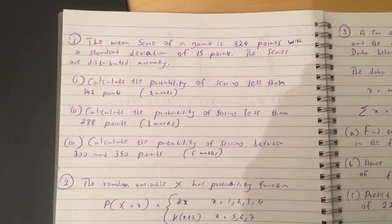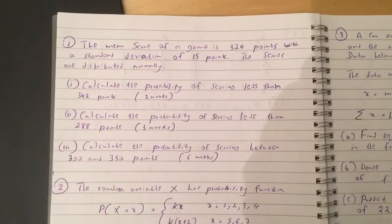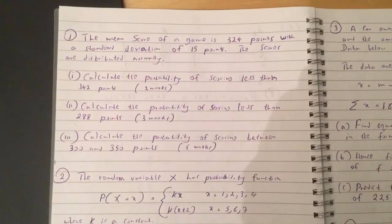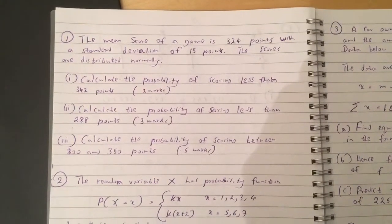Okay guys, this is the S1 potential paper. The mean score of a game is 324 points with a standard deviation of 15 points. The scores are distributed normally.